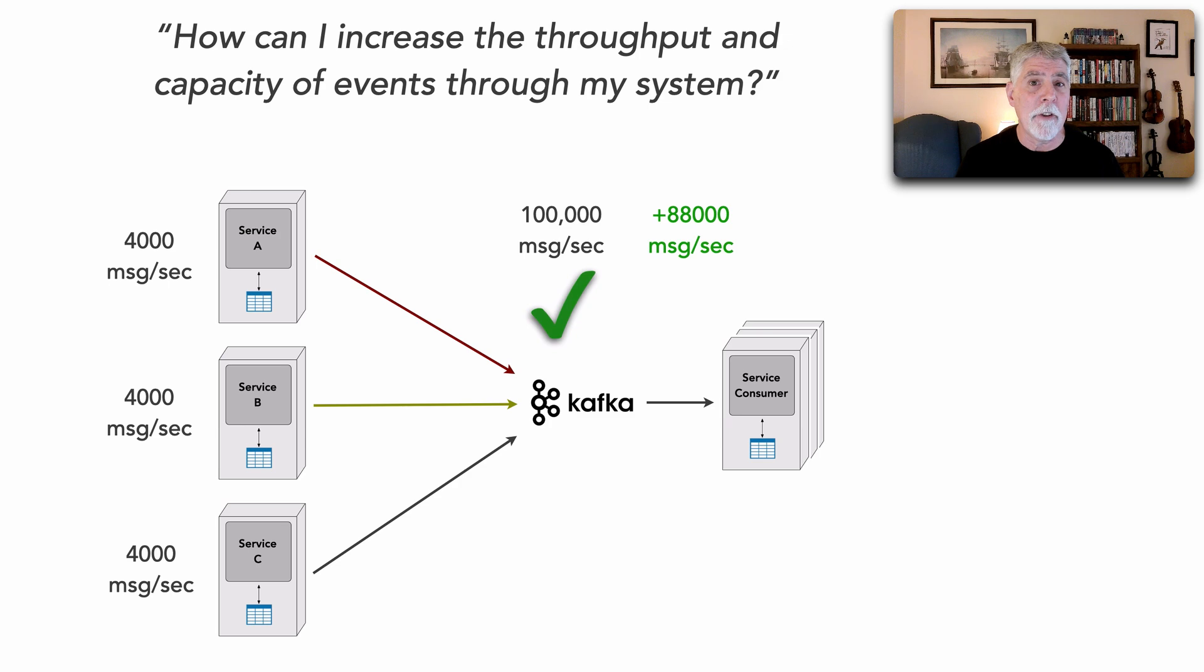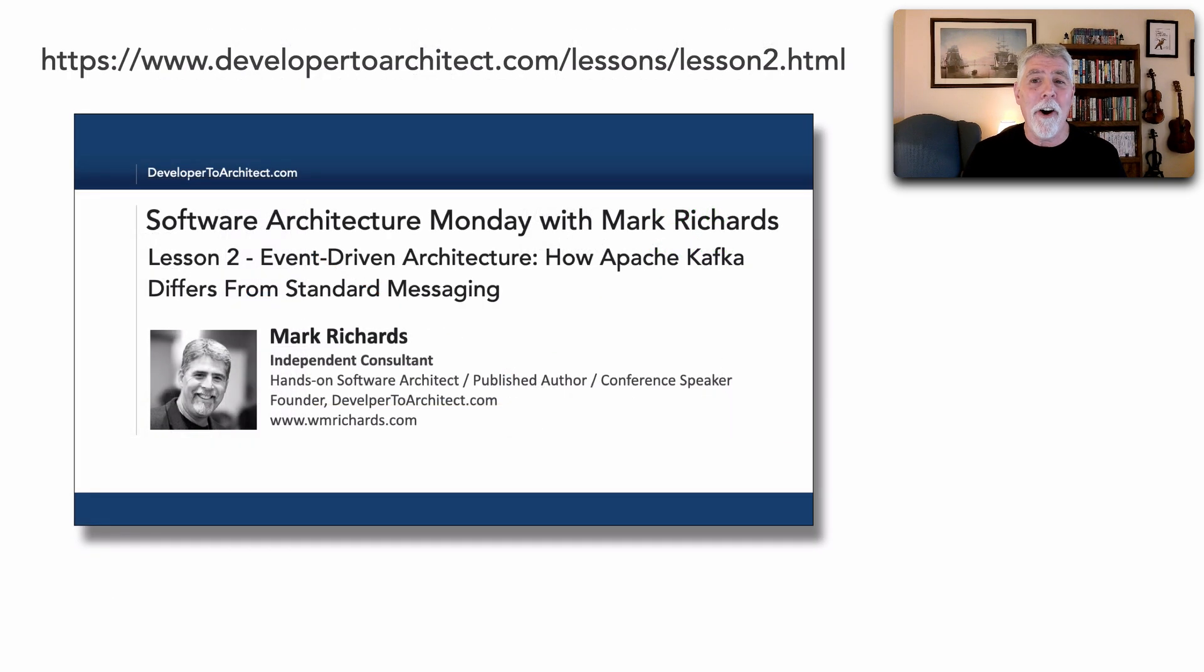But this can be a solution, and as a matter of fact I talked about Apache Kafka almost six years ago in lesson two where I talked about the differences between Kafka as a streaming architecture and standard messaging, things like RabbitMQ and ActiveMQ and these kind of brokers. Well, they are different and Kafka does have some superpowers. One of them being this extreme level of throughput.